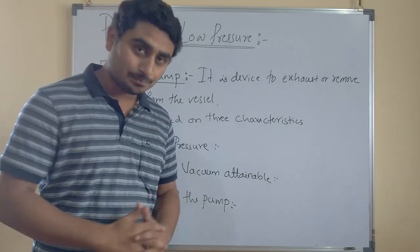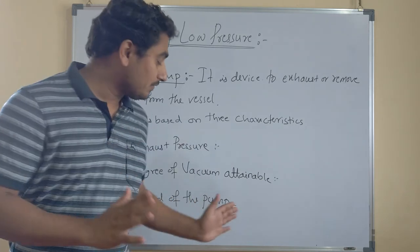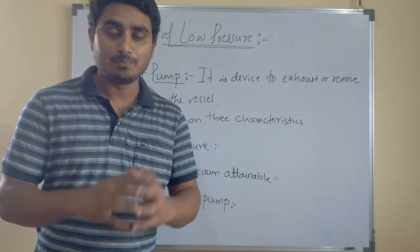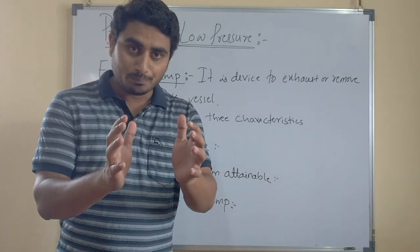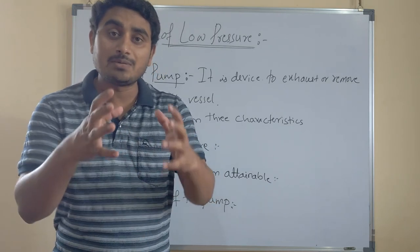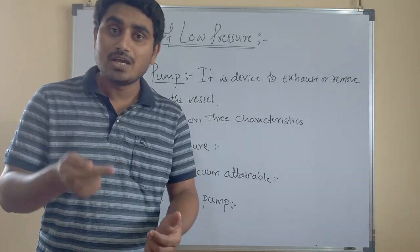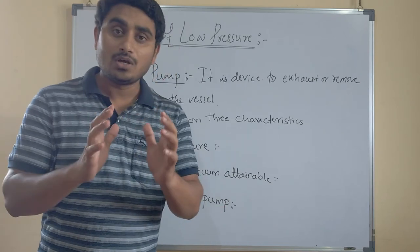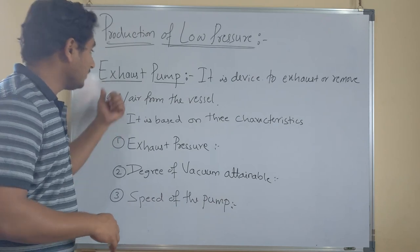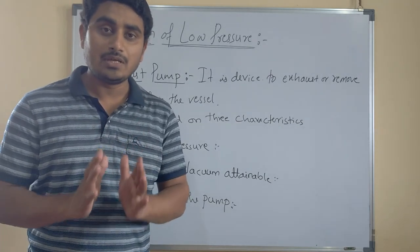The third characteristic is the speed of the pump. It is defined as the rate of reduction of pressure of a given volume. For example, if I take some volume of gas and reduce its pressure with respect to time, that is the speed of the pump. These are the three characteristics of the exhaust pump. Next, we will discuss the expression for the speed of the pump.